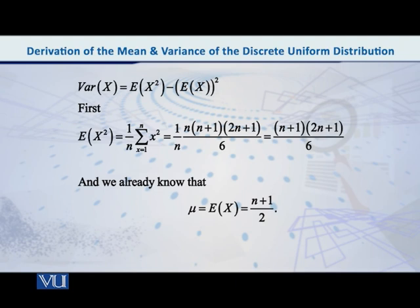But again, from school days we know that the sum of squares of the first n natural numbers is given by n into n plus 1 into 2n plus 1, over 6.